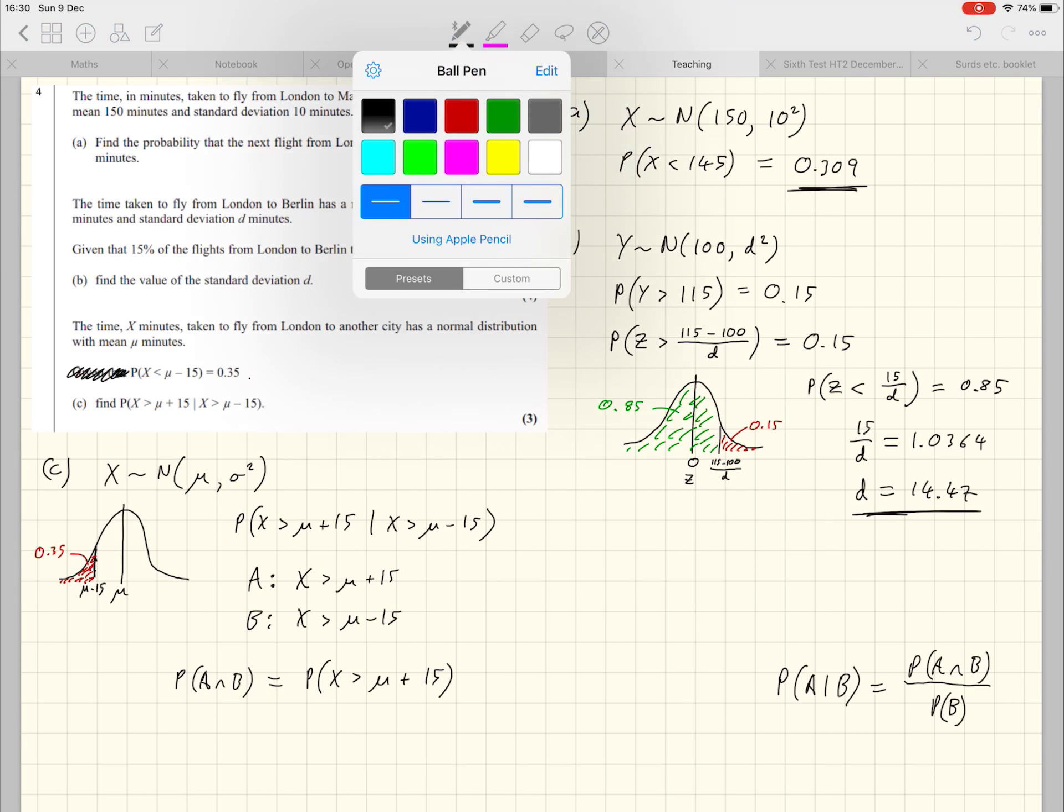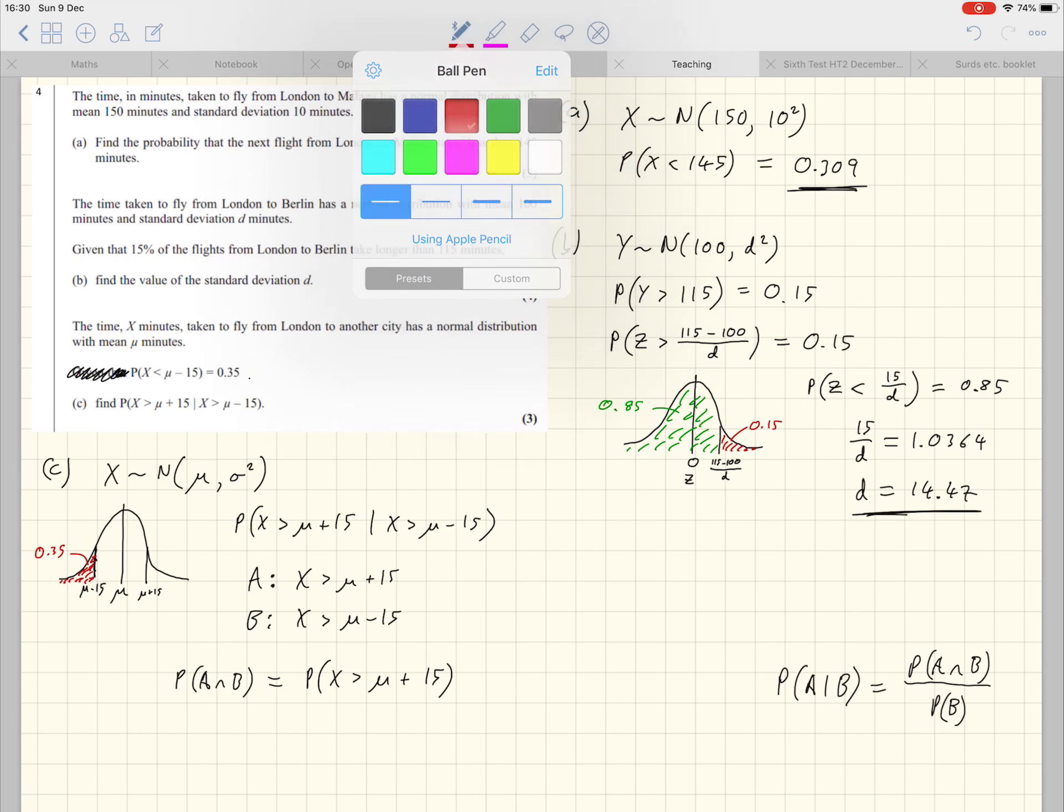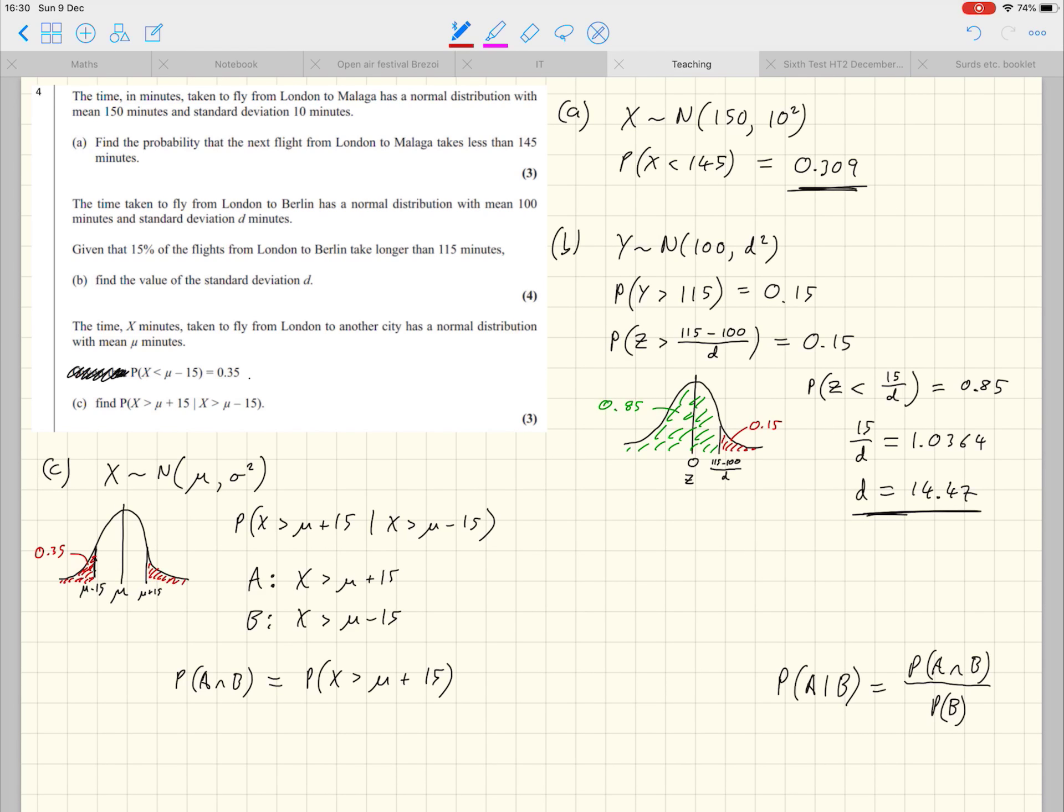Because if it's bigger than mu plus 15 and bigger than mu minus 15, it must just be bigger than mu plus 15. And that we can get from our graph by symmetry. Because it's completely symmetrical, I can draw another line here at mu plus 15 and this area here must also be 0.35. So that is 0.35.